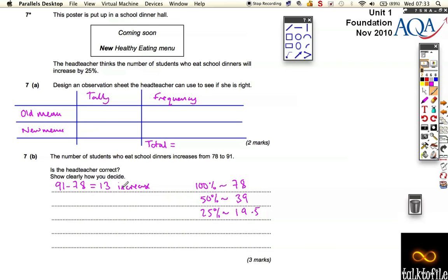So the numbers actually increased by 13 from 78 to 91. But if there was going to be a 25% increase, then the numbers should have increased by 19.5. You can't really increase by 19.5 because we're talking about pupils here and we don't really want to chop pupils in half, no matter how naughty or annoying they are.